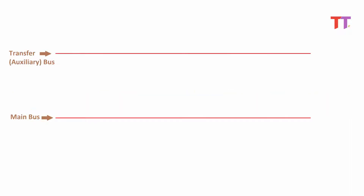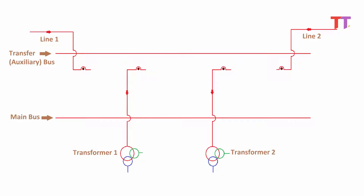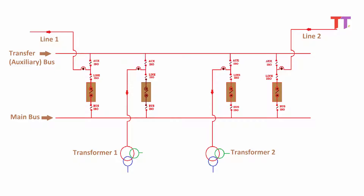3. Main and transfer bus system. As shown in the diagram, there are two buses — one main bus and one transfer bus, also called the auxiliary bus. Each bay or equipment such as line or transformer is connected to both buses: to the main bus through a circuit breaker and isolators, and to the transfer bus through an auxiliary isolator only. These two buses are connected by a circuit breaker and isolators called the bus coupler, and this bay is called the Transfer Bus Coupler (TBC) bay. In normal condition, the load of all bays is on the main bus and the transfer bus is in standby mode, meaning auxiliary isolators are open. Also, the TBC bay circuit breaker and isolators are open.